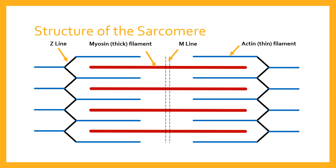The myosin filaments are in fact attached not directly to the Z-line, but by virtue of another filament — titin filaments. These titin filaments extend from the Z-line of the sarcomere and bind into the myosin filament. The titin filament is highly elasticated — it's one of the most elastic proteins anywhere in the human body — and it is the titin filament that attaches the thick myosin filament to the Z-line.